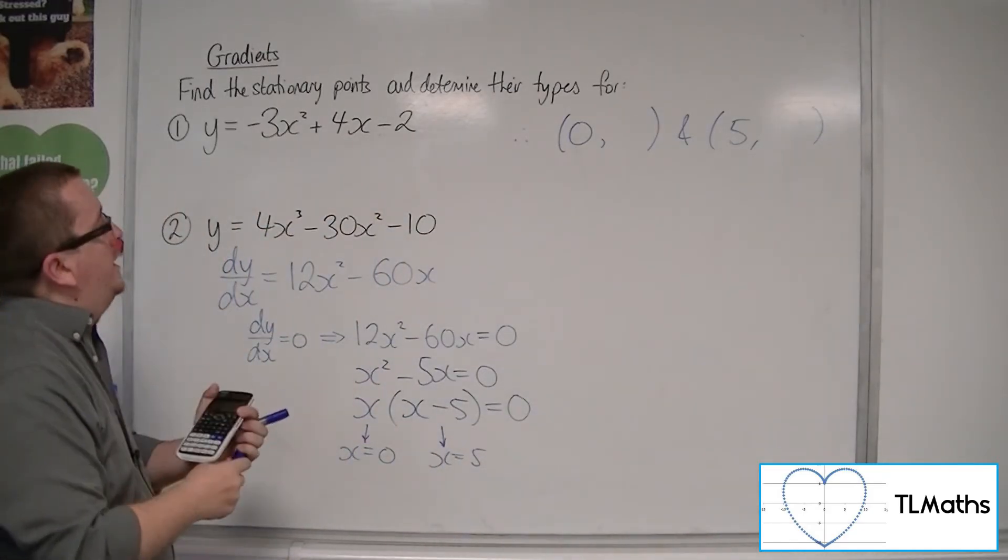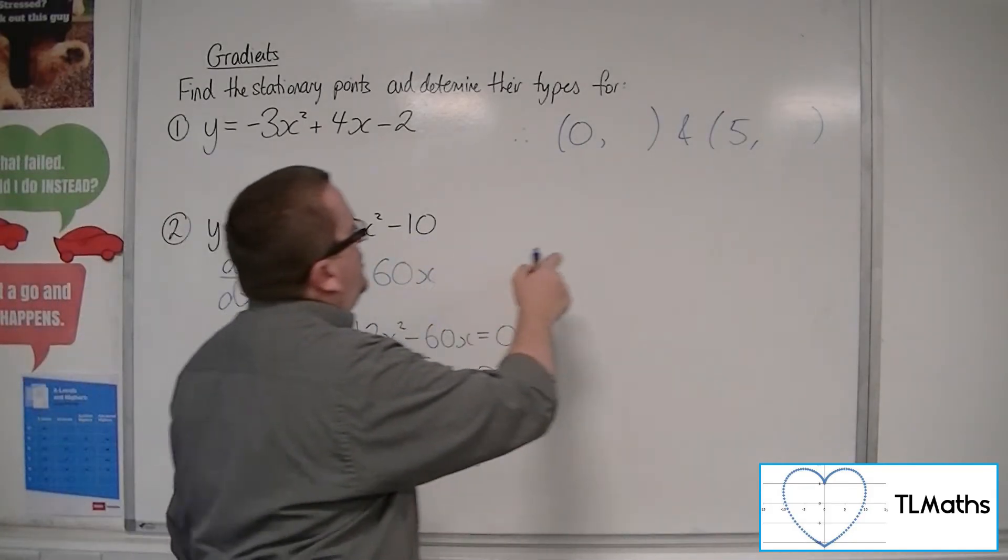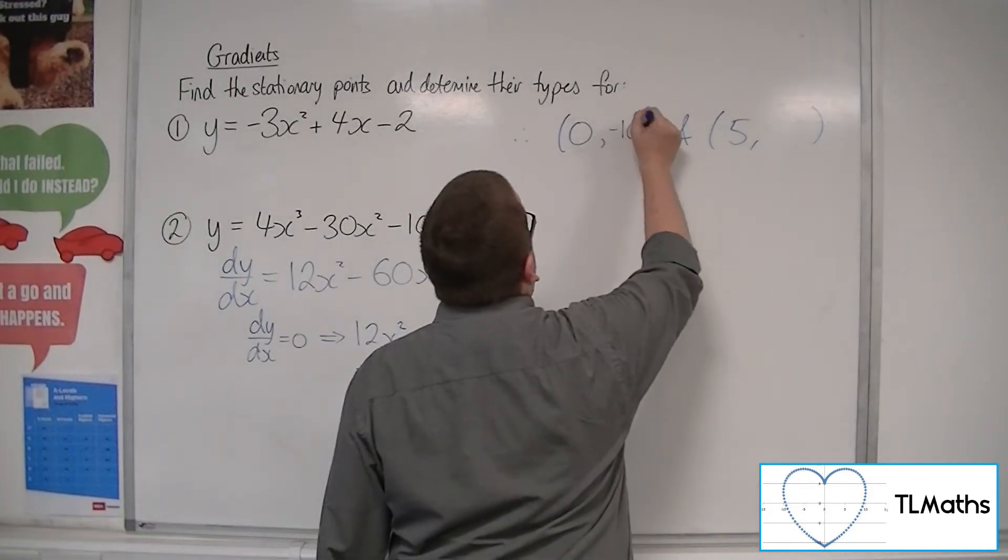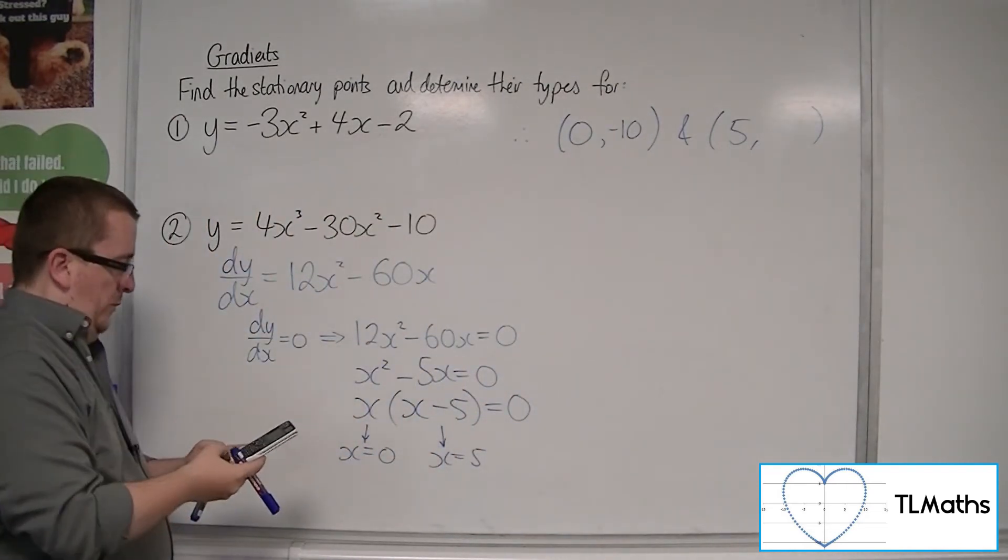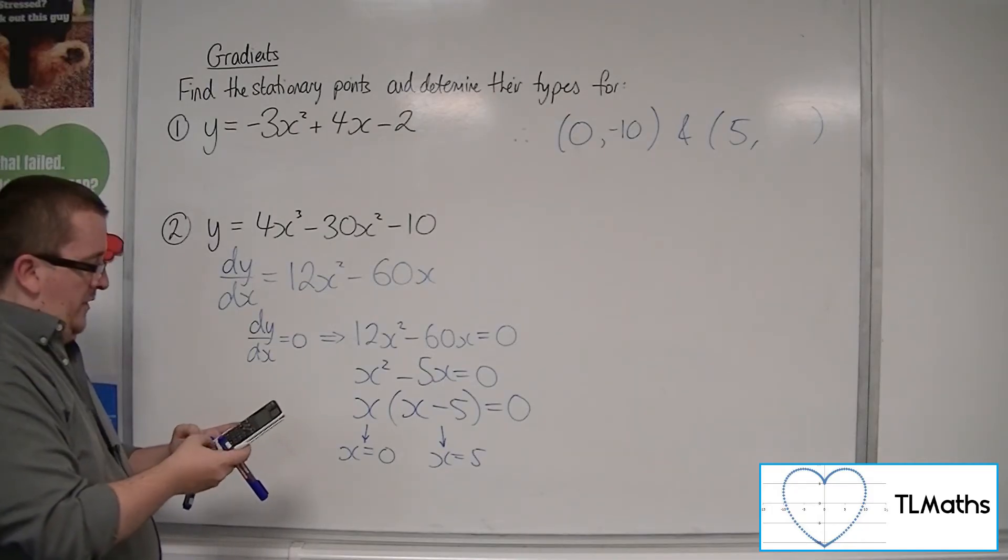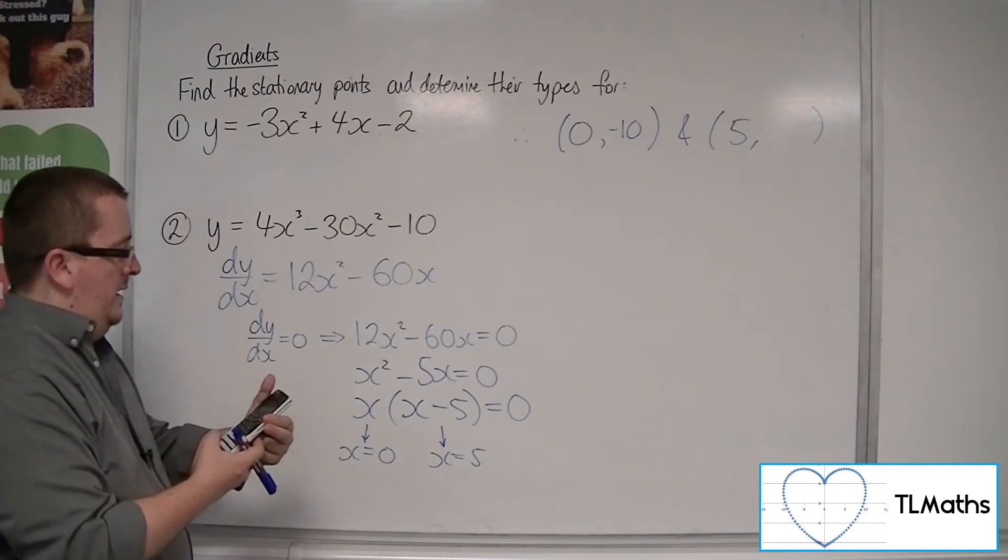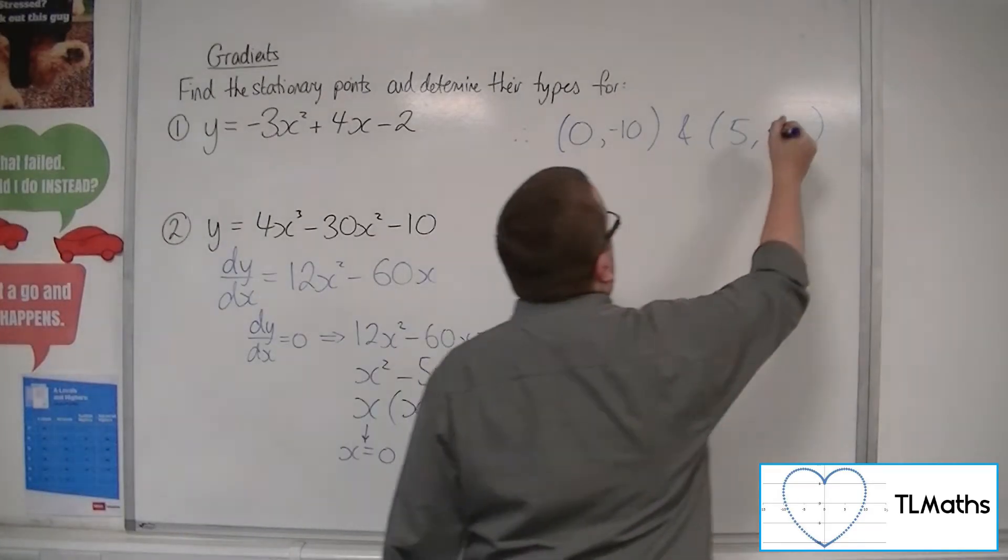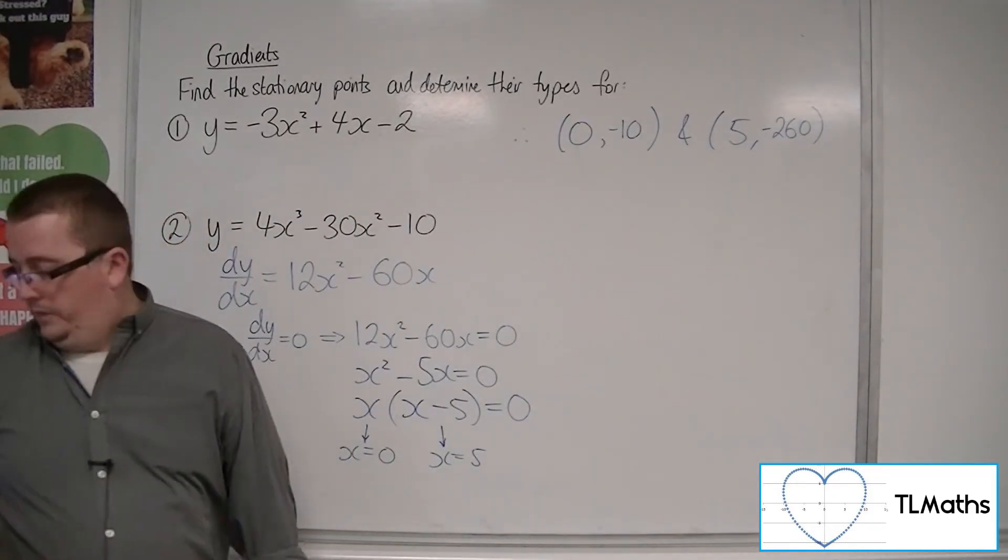We need to find the y coordinates of those. Now, if I substitute x is 0 into this, I'm just going to get minus 10. So that's straightforward. Now, if I substitute 5 into this, 4 lots of 5 cubed take away 30 lots of 5 squared, take away 10 is minus 260. So these are the two stationary points.